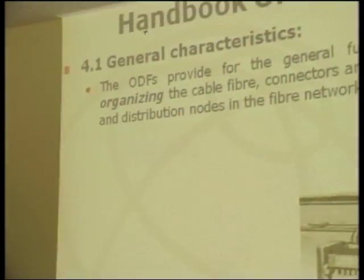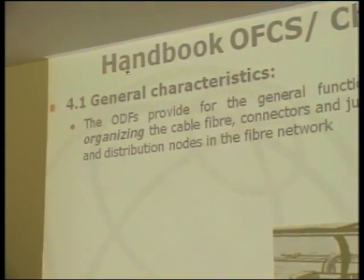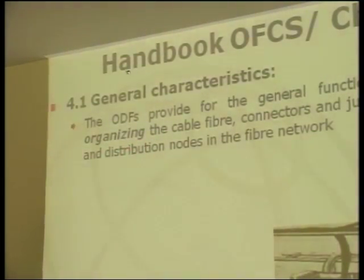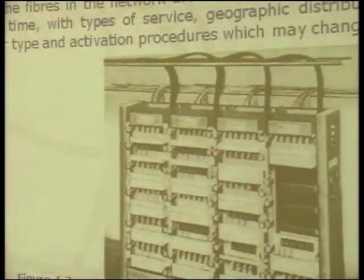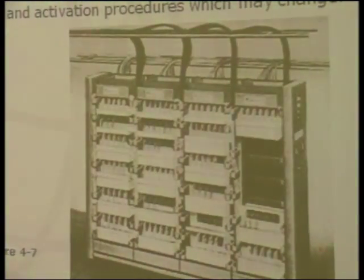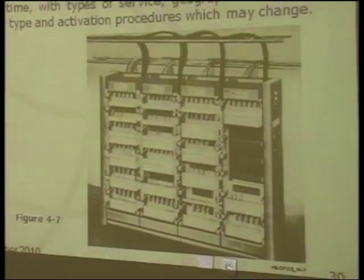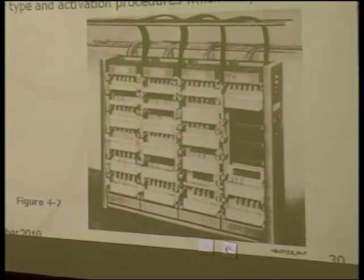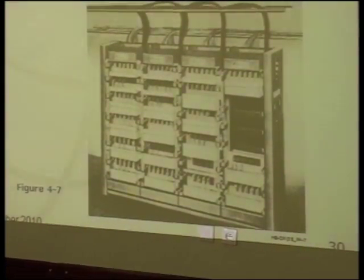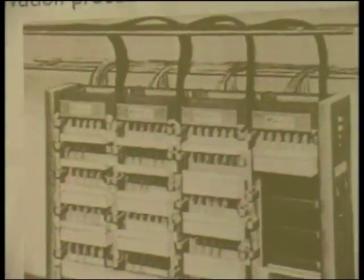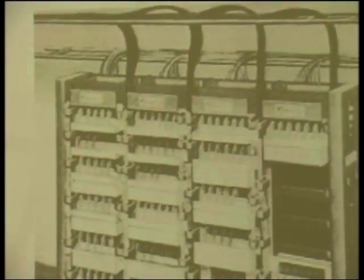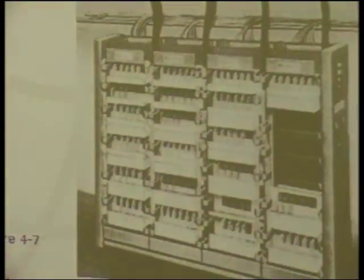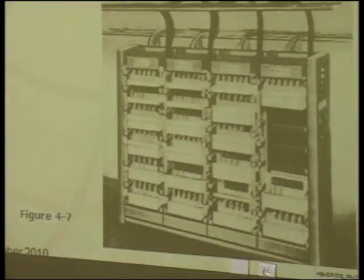The ODF provides the general functions of test access and organizing the cable fiber, connectors, jumpers, termination nodes, and distribution nodes in the fiber network. The functionality and flexibility of the fiber distribution unit is especially important when fibers in the network are brought into service over time with different types of service, geographic distribution, connector types, and activation procedures that may change.